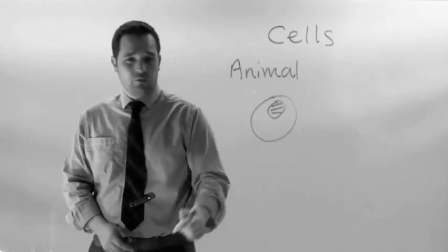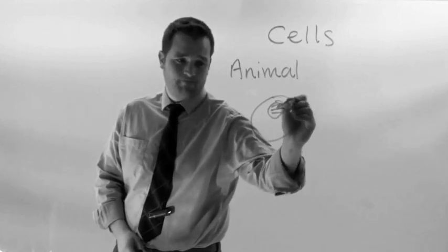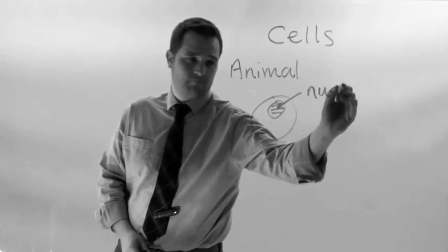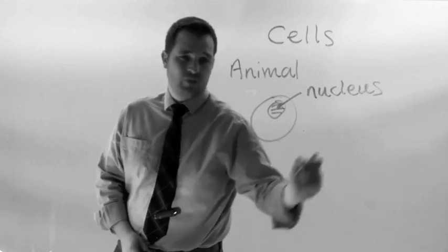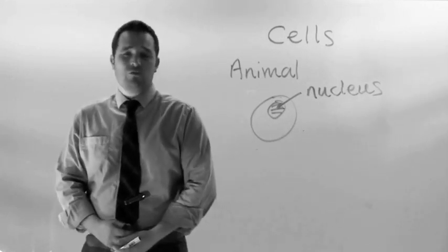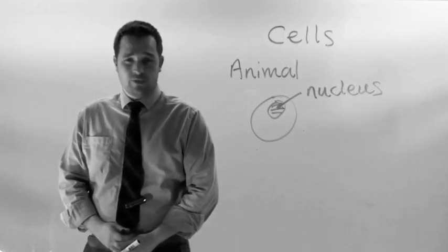First, the animal cell, which looks a lot like a fried egg. The nucleus is like the control centre of the cell. It controls what the cell does.